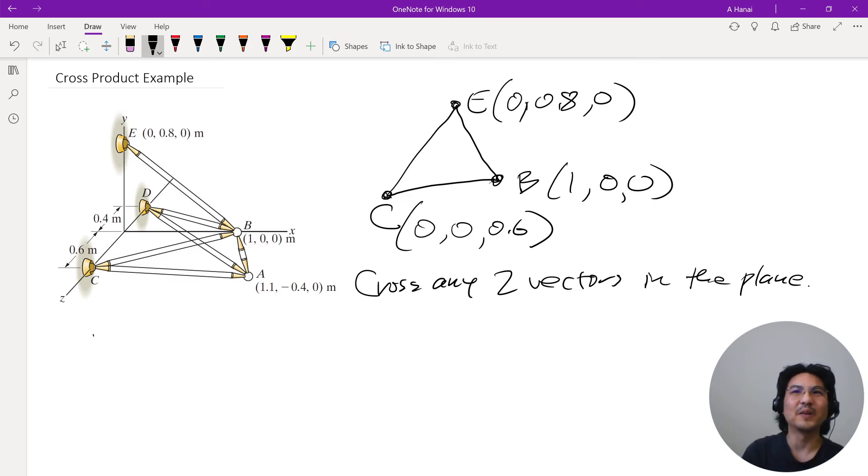All right, so let's just pick two. I'll make a vector r from B to E. And then I'll make another one from B to C. So that's two vectors in the plane, and then we'll just cross them. So from B to E, it's 0 minus 1. And then in the y direction, 0 minus 0.